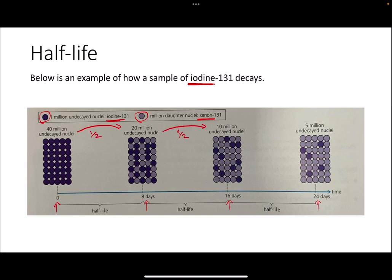The number keeps being divided by two. At the end of 32 days you should expect 2.5 million undecayed nuclei, and then at 40 days it should be 1.25 million, and so on.